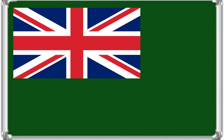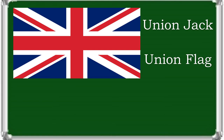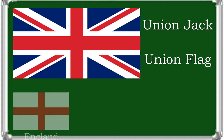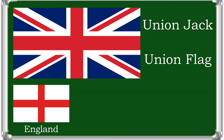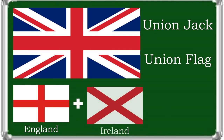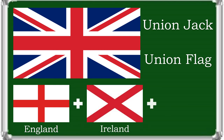The National Flag of the United Kingdom is the Union Jack, also known as the Union Flag. The current design of the Union Jack dates back from the Union of Ireland and Great Britain in 1801. It consists of the Red Cross of England and Wales, superimposed on the Cross of Ireland, superimposed on the Cross of Scotland.